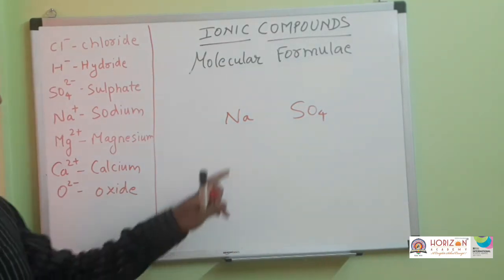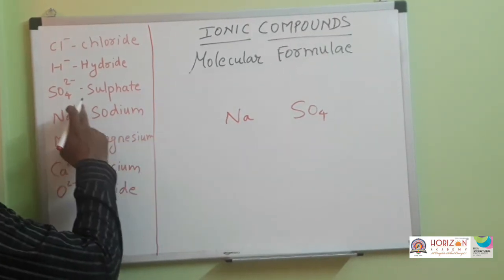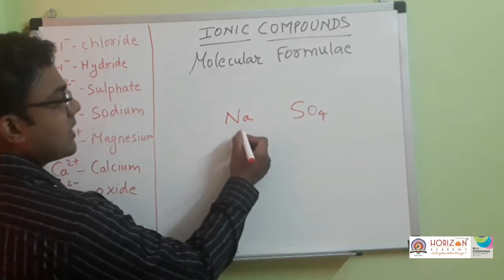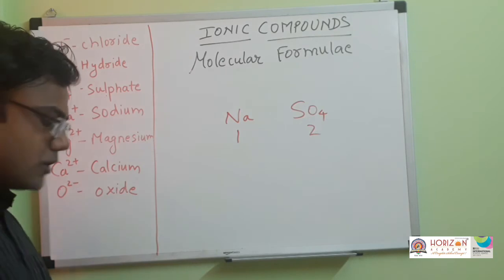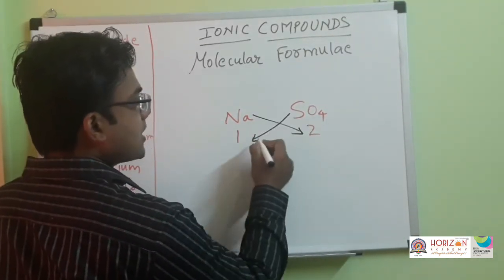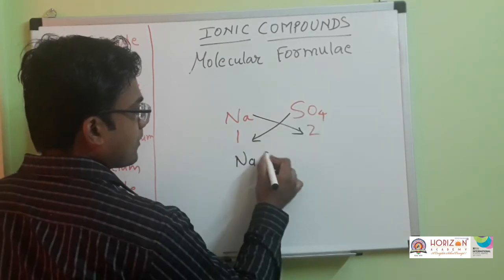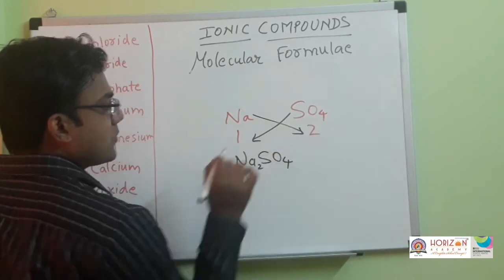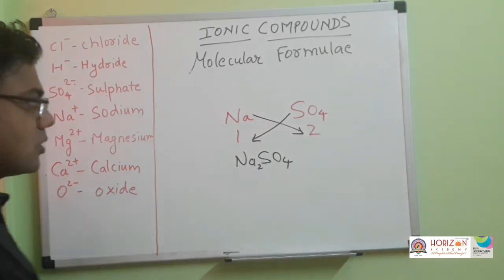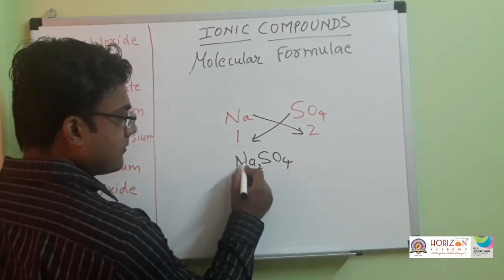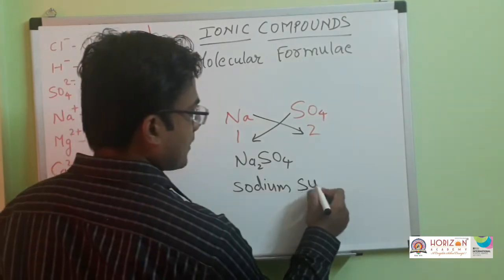Basic radical is on the left side and acidic radical on the right side. Next, write the valency of each radical — sodium has a plus one charge so valency is one, and sulfate has a two minus charge so valency is two. Third step: cross multiply the valencies. Fourth step: write the result — Na2SO4. Since the coefficient of SO4 is one, no need to write it. The name is sodium sulfate — basic radical name first, so sodium, then sulfate.